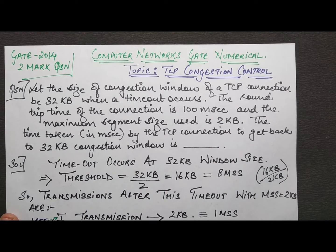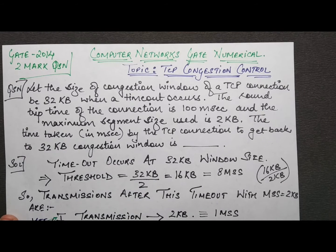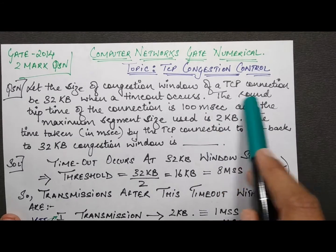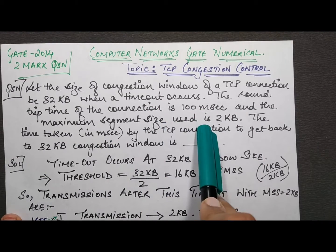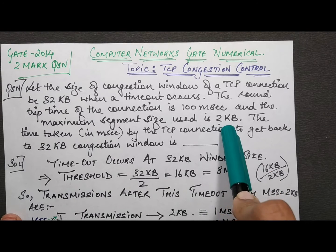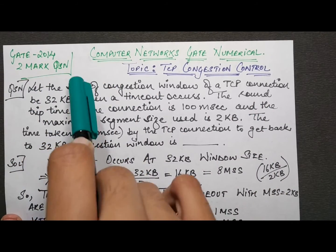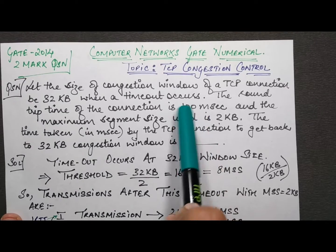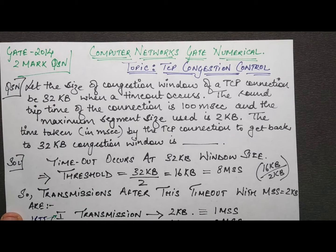This relates to the previous question from GATE 2012 discussed in the prior session, which you can view. Coming back to this question: the round trip time is 100 milliseconds and the maximum segment size is 2 KB. So the congestion window of 32 KB divided by 2 KB gives us 16 MSS.